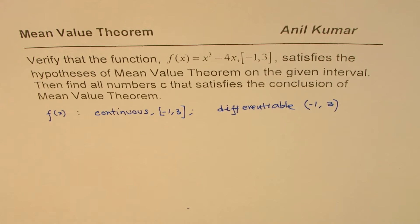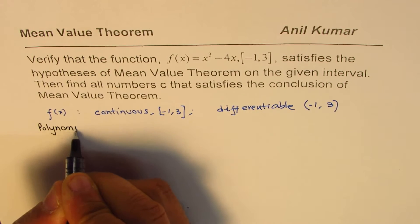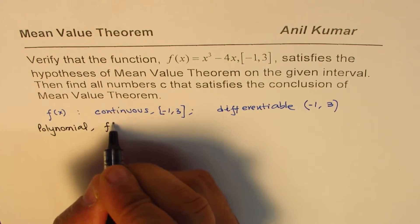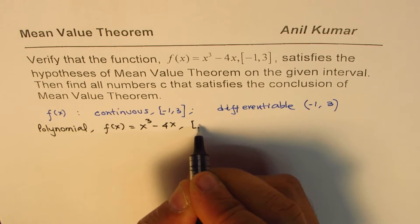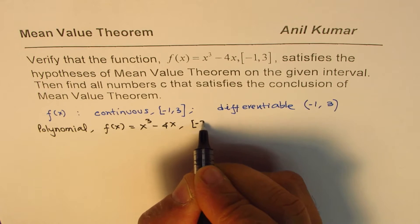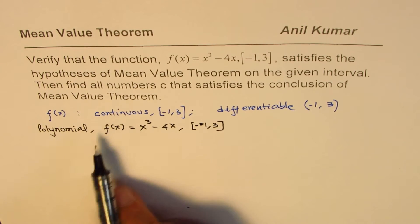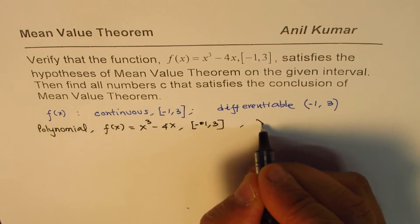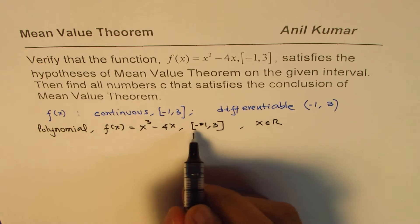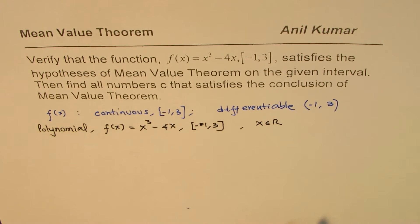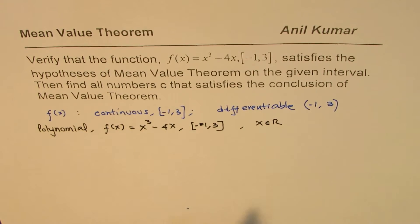Now, since the function given to us is a cubic function, it's a polynomial. So, we have a polynomial, which is f of x equals x cubed minus 4x, and we're talking about the closed interval from minus 1 to 3. Now, since polynomial is a continuous function and differentiable in its domain, x belongs to real numbers, it is also continuous and differentiable within the given domain. So, that's the kind of proof we can say that satisfies hypothesis of mean value theorem. So, that's the first part.